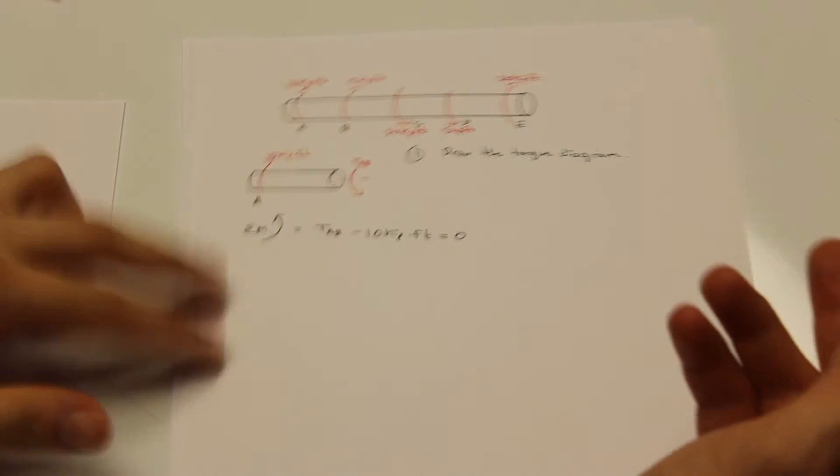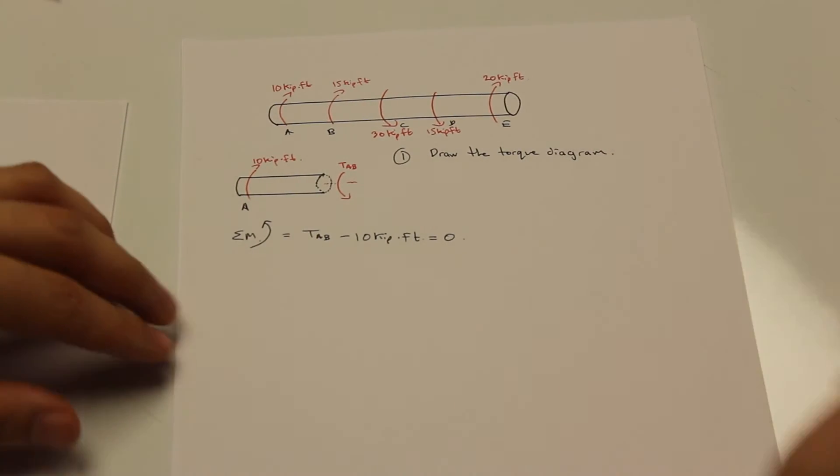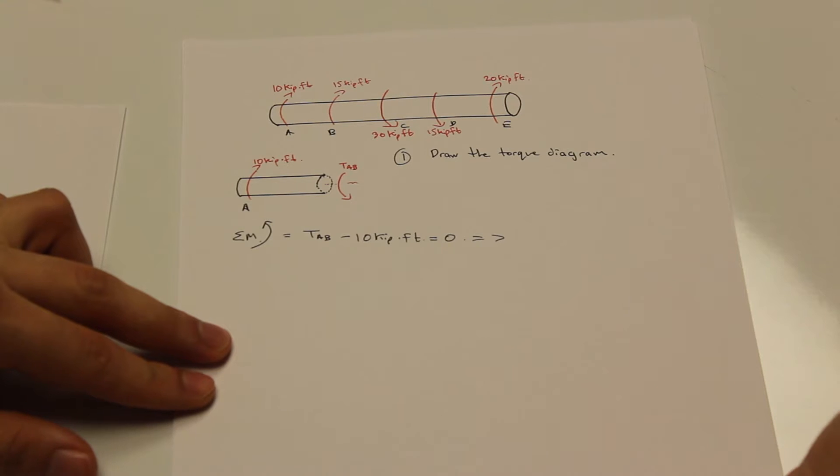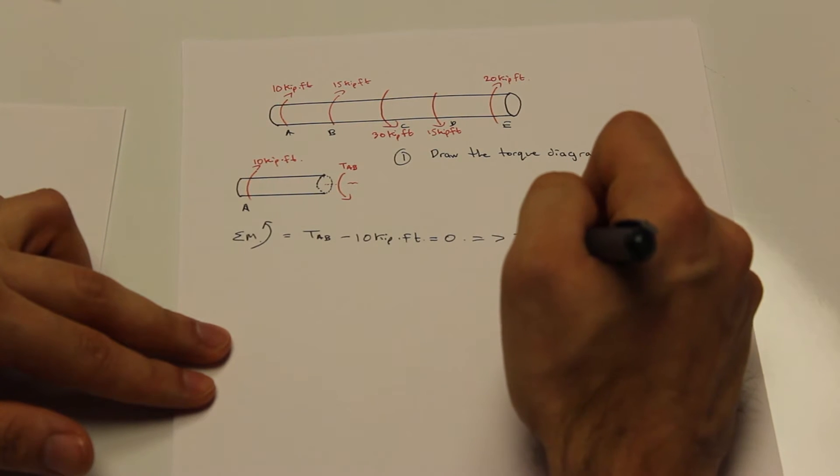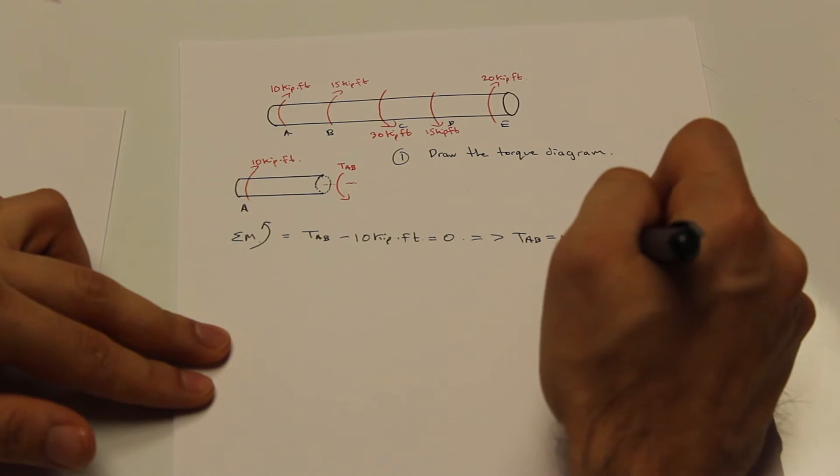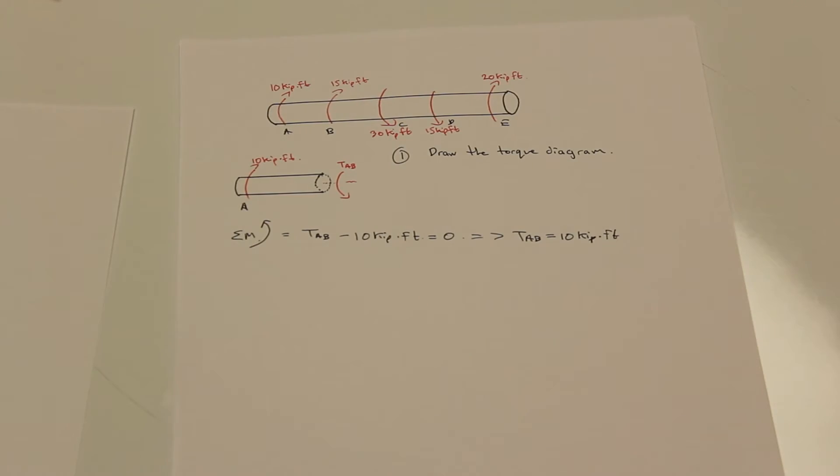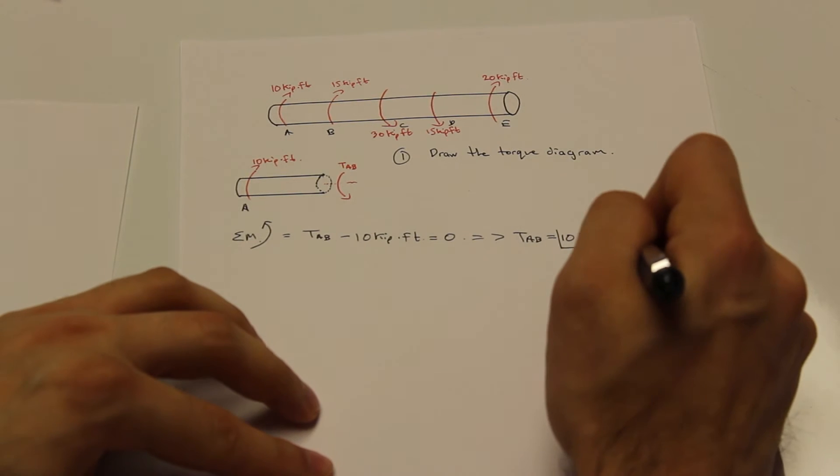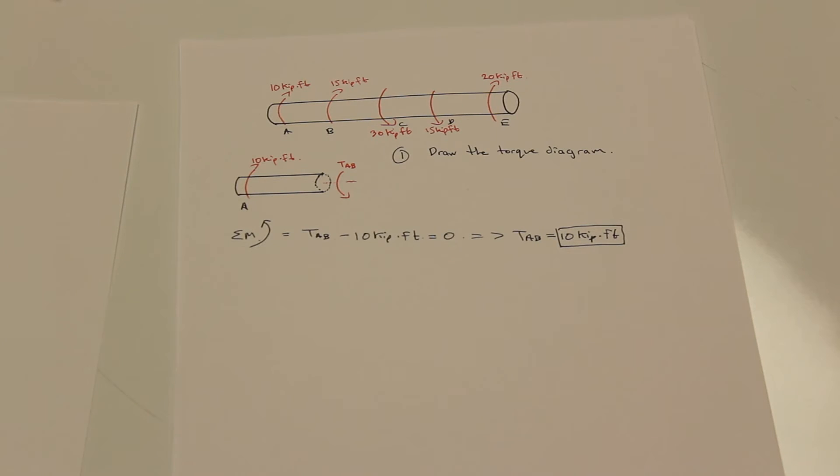So how do we continue from here? Pretty simple. We're just going to solve for TAB. That's it for the first section. So TAB is 10 kip feet.